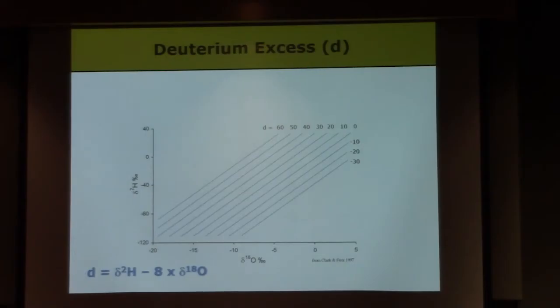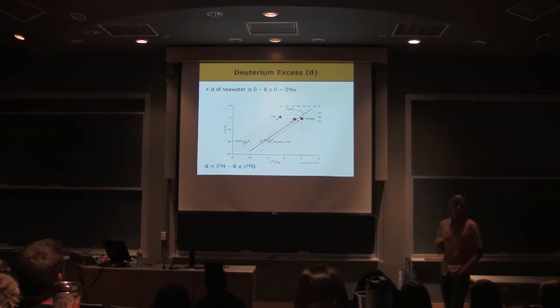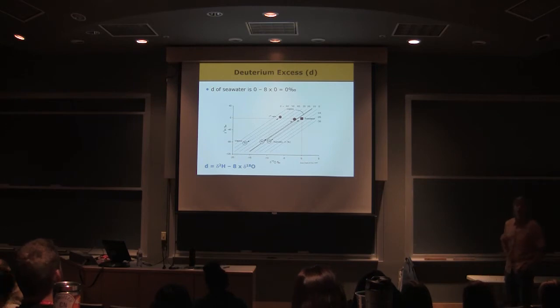So how does this relate to the Global Meteoric Water Line? Let's look at it. You already told me seawater is 0, 0, right? That's the hydrogen-oxygen isotope composition of seawater. My plotting's not perfect here, but there it is.